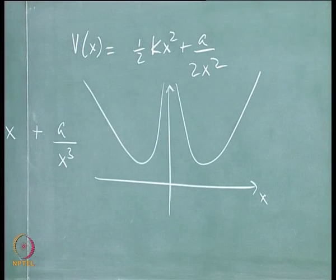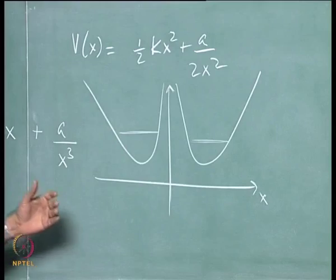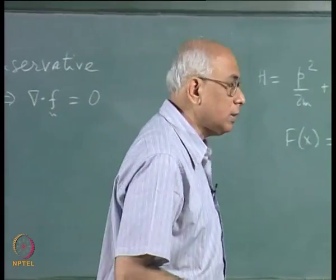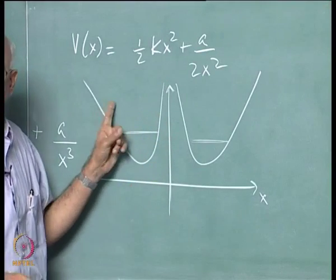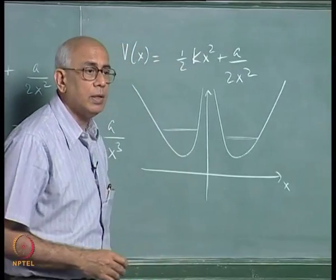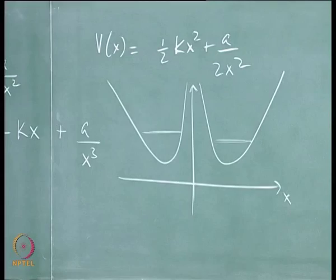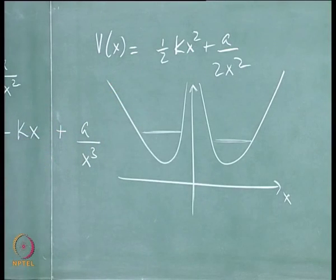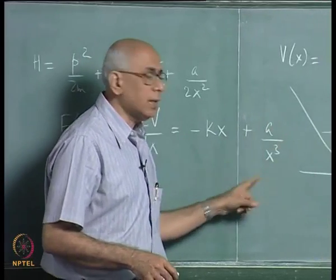The particle can oscillate in either well symmetrically. For the same energy it could have a center of oscillation on the left or right side. If you compute the time period of oscillation in this potential, it turns out to be independent of the energy. This oscillator is isochronous but is not a linear harmonic oscillator because the force has the extra term a/x³.